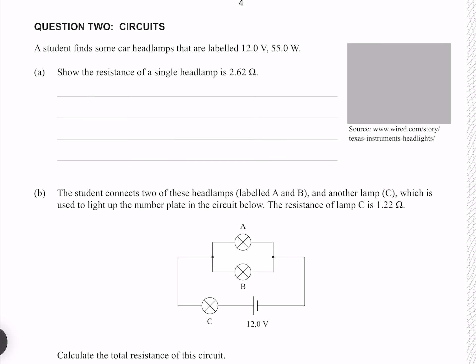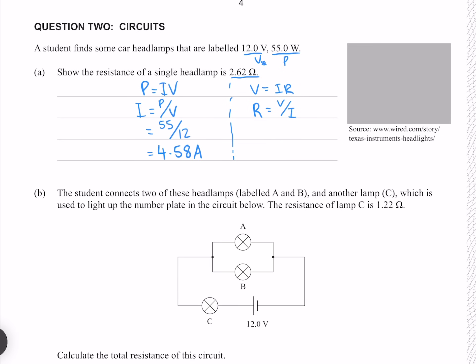Question 2. A student finds car headlamps labeled 12 volts, 55 watts. Show the resistance of a single headlamp is 2.62 ohms. Using P = IV, we solve for current by dividing power by voltage, giving 4.58 amps. Then using V = IR, dividing voltage by current gives 2.62 ohms, which is what we're trying to find.